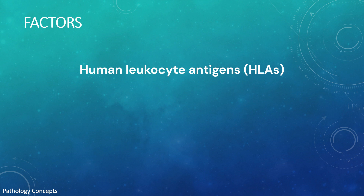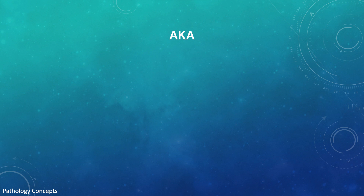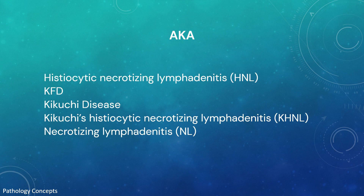Specific human leukocyte antigens have been identified in populations with higher susceptibility to Kikuchi Fujimoto disease, specifically HLA class 2 alleles including HLA-DPA1 and HLA-DPB1. Other names for this disease include histiocytic necrotizing lymphadenitis (HNL), KFD, Kikuchi disease, and necrotizing lymphadenitis.